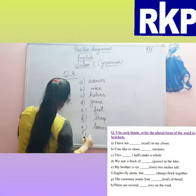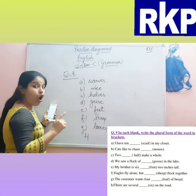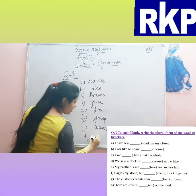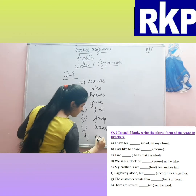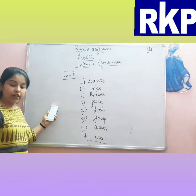H: 'There are several ___ on the road.' — Ox becomes oxen, O-X-E-N. Clear?